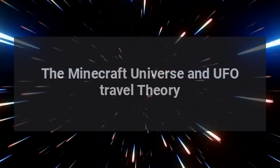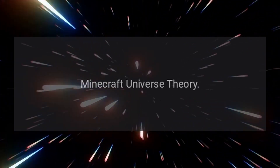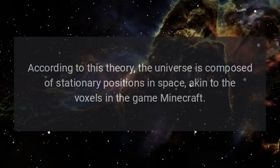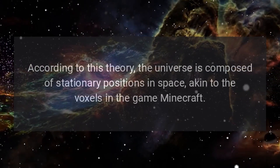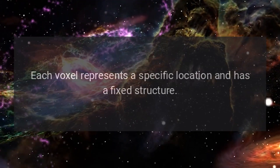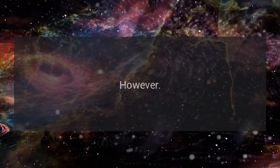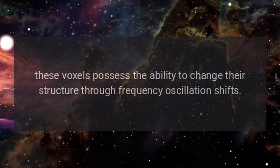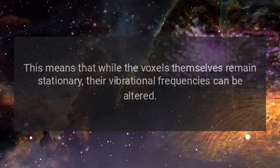The Minecraft Universe Theory proposes that the universe is composed of stationary positions in space, akin to the voxels in the game Minecraft. Each voxel represents a specific location and has a fixed structure. However, these voxels possess the ability to change their structure through frequency oscillation shifts, meaning that while the voxels themselves remain stationary, their vibrational frequencies can be altered.